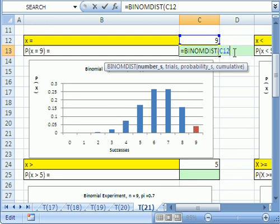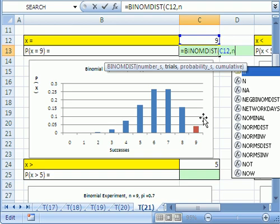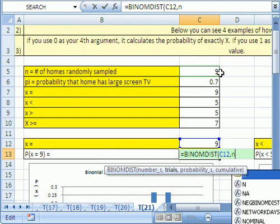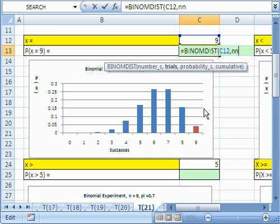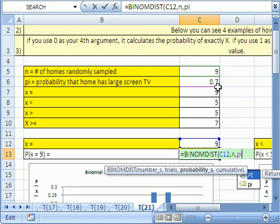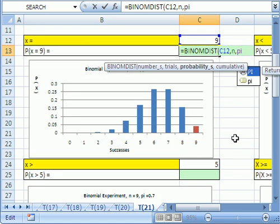Then I'm going to type a comma and it goes to trials. The number of trials is N. That's nine. If you don't believe that that N is representing nine, scroll up and you can see the green box. Click a comma, and now it's asking for the probability. That's PI. Don't believe it? Scroll up. There's the purple one. And then comma.